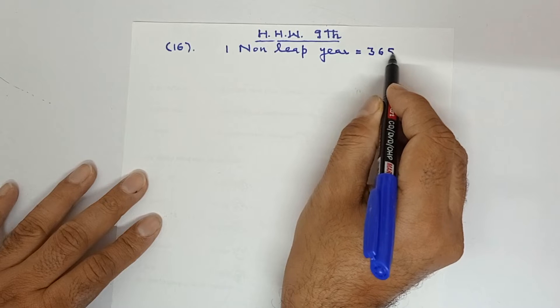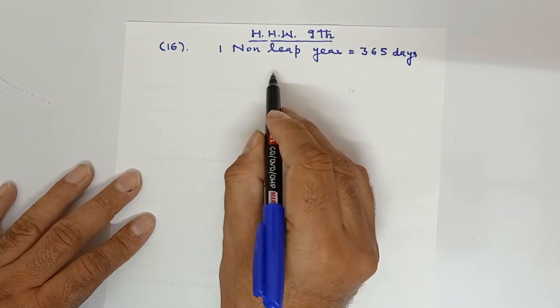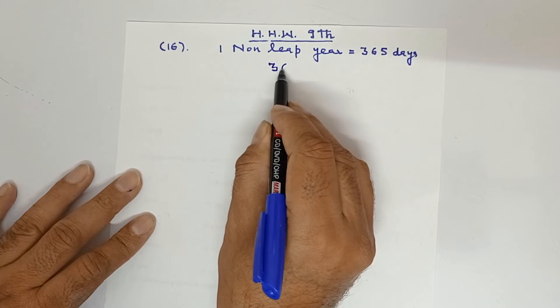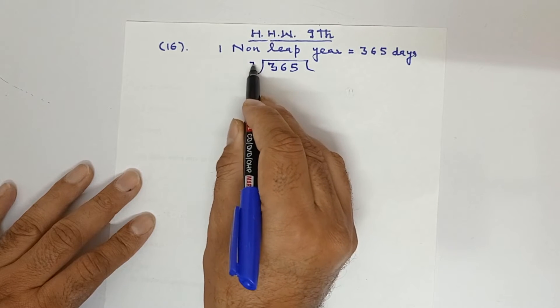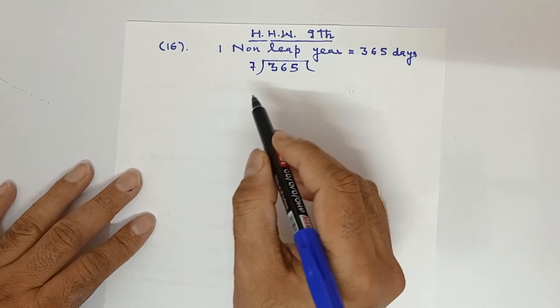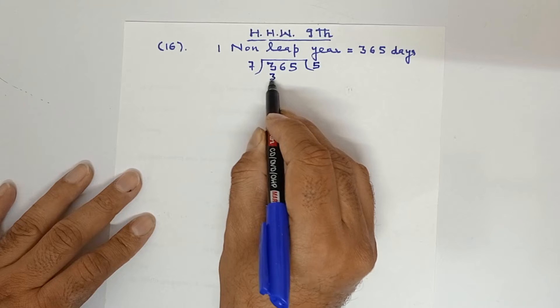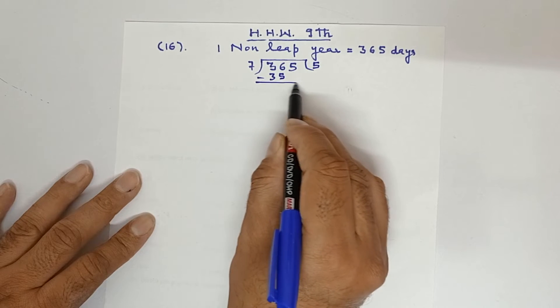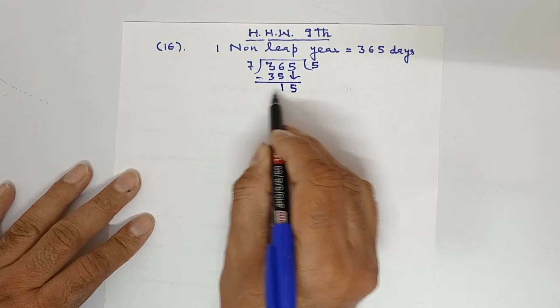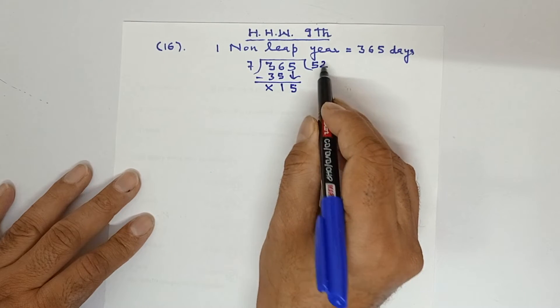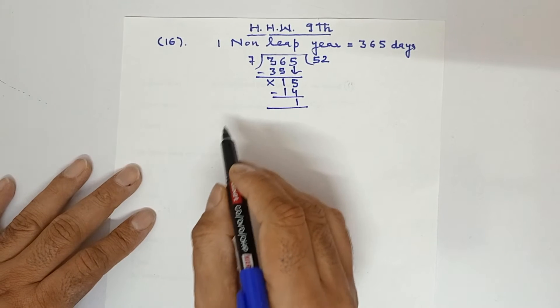And in a leap year, there are 366 days. So what will you do now? Divide 365 by 7. Why 7? Because you want to know how many weeks are there. 7 fives are 35, so this is 1 and 5 will come here.